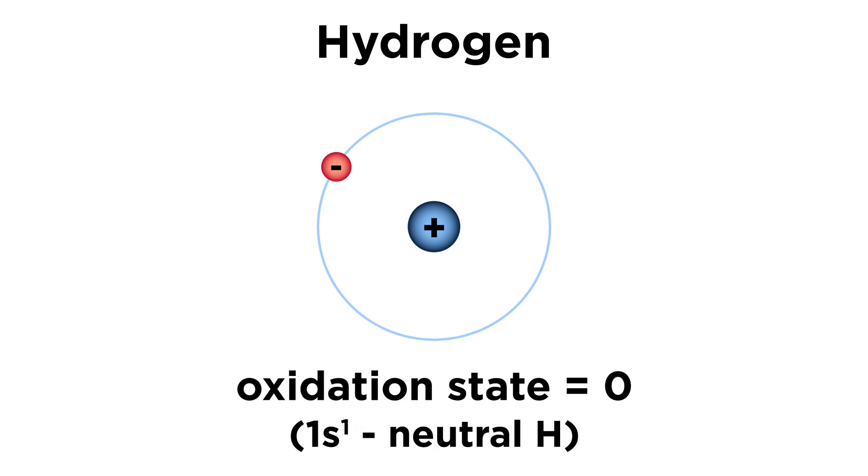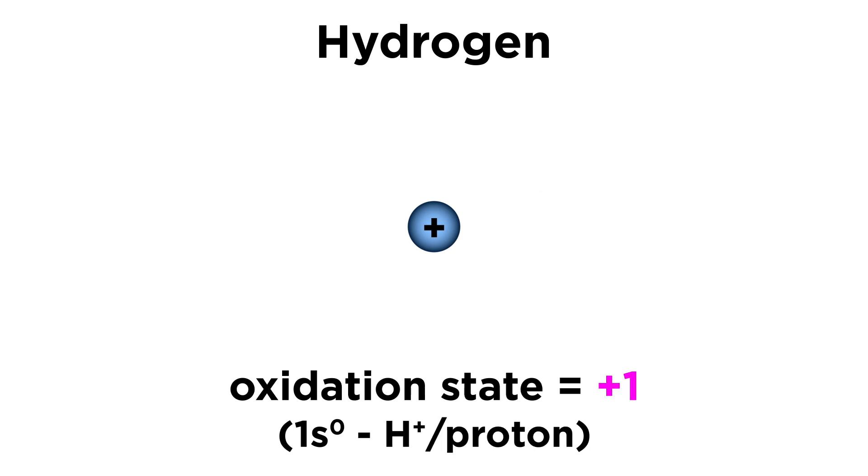There are two other common oxidation states. The first would be plus one, which has an electron configuration of 1s0, meaning an empty outermost shell, or simply no electrons at all, which is why we often refer to H plus as simply a proton.